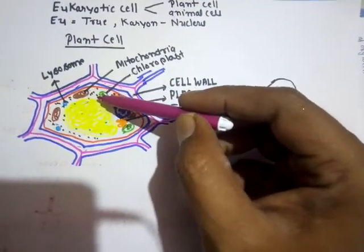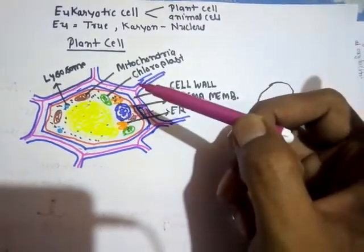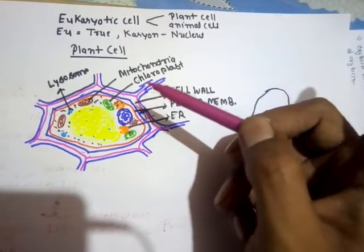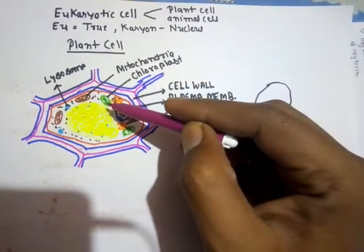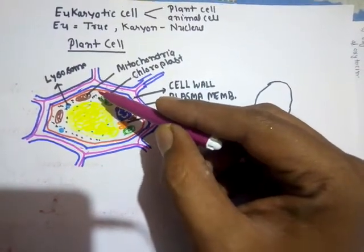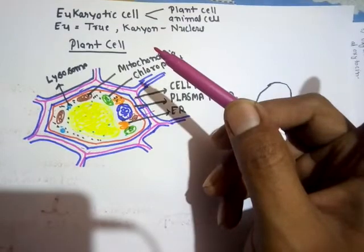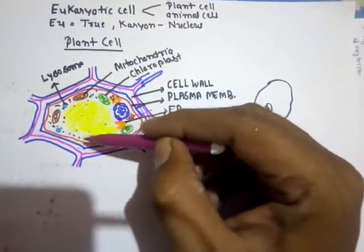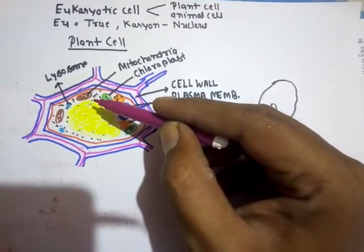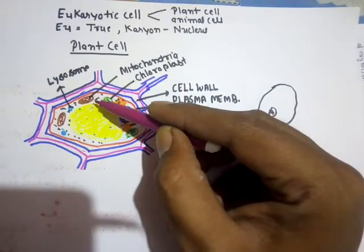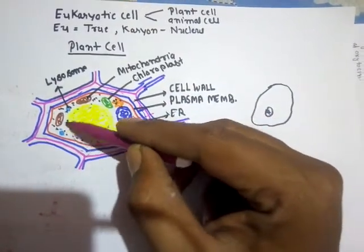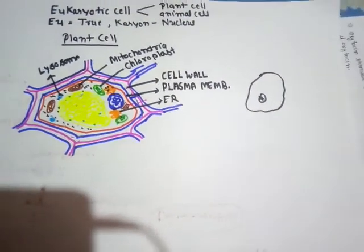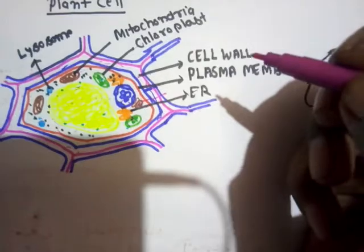The last organelle found in plant cells is the ribosome. Always remember: ribosomes are non-membrane-bound organelles — they have no membrane. In plant cells, the ribosomes found in the cytoplasm are of the 80S type, unlike prokaryotic cells where ribosomes are of the 70S type. Ribosomes can be found in two states: attached to the endoplasmic reticulum, or free in the cytoplasm. They are the site of protein synthesis.